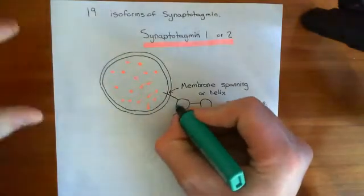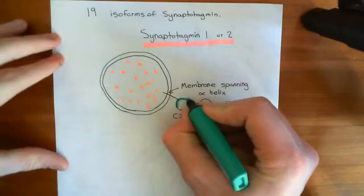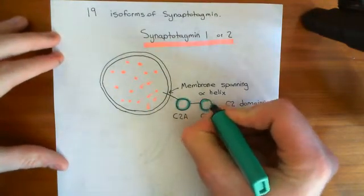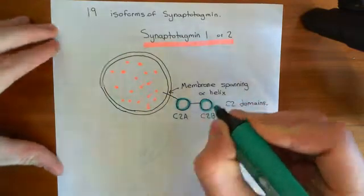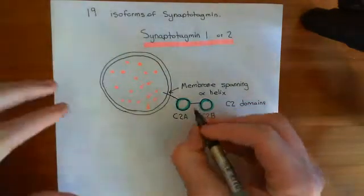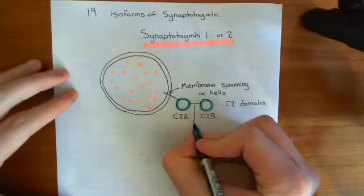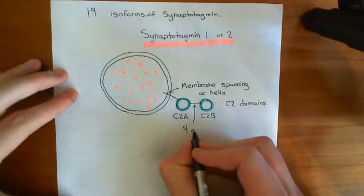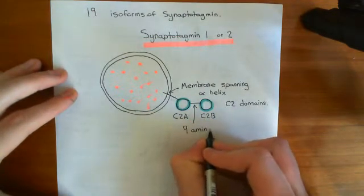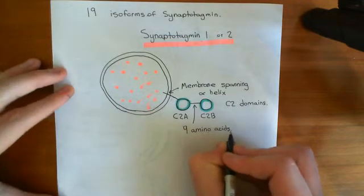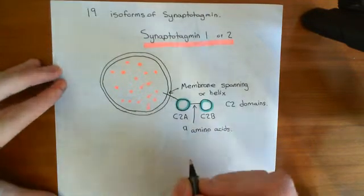Here is our C2A domain, and here is our C2B domain. The linker between the C2A domain and the C2B domain contains specifically nine amino acids.